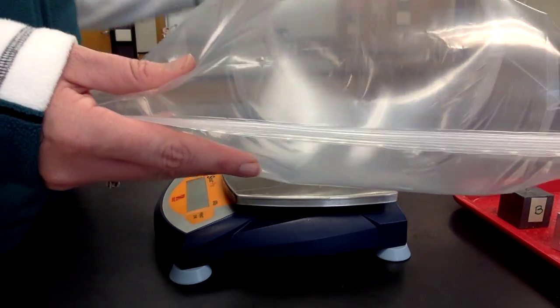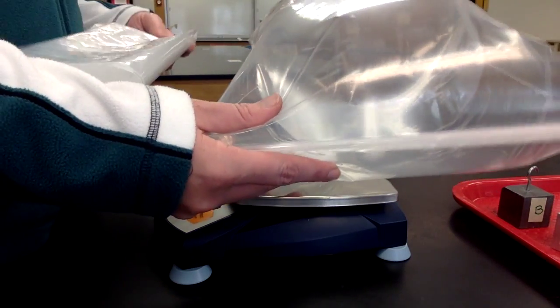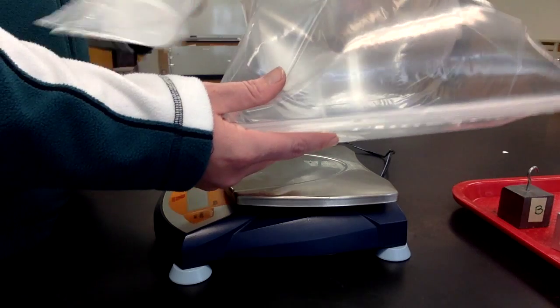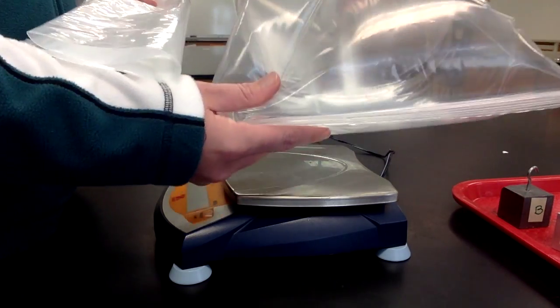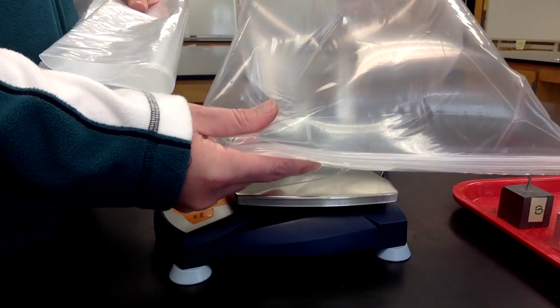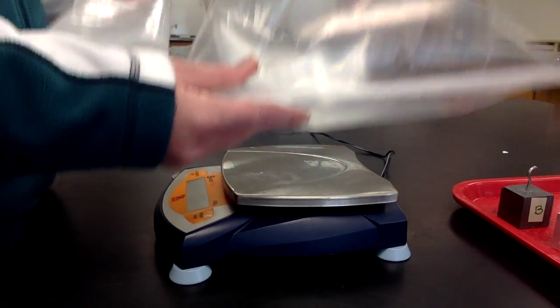Now, in order to find the mass of just the gas, I must subtract the mass of the container from the mass of the container with the gas. That would give me the mass of just the gas.